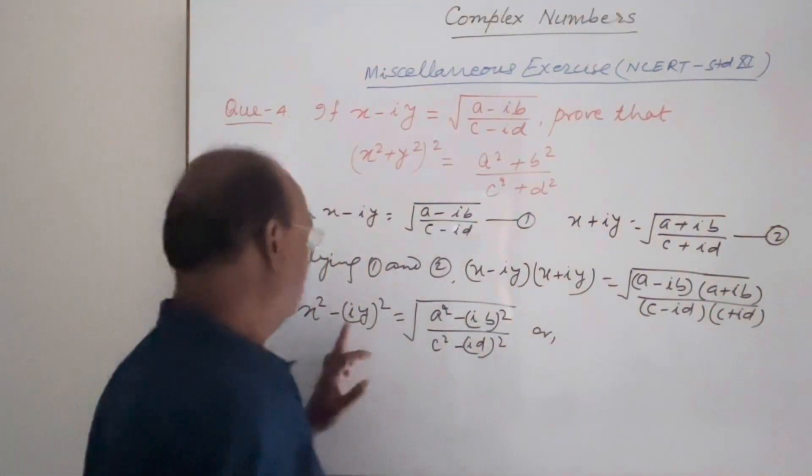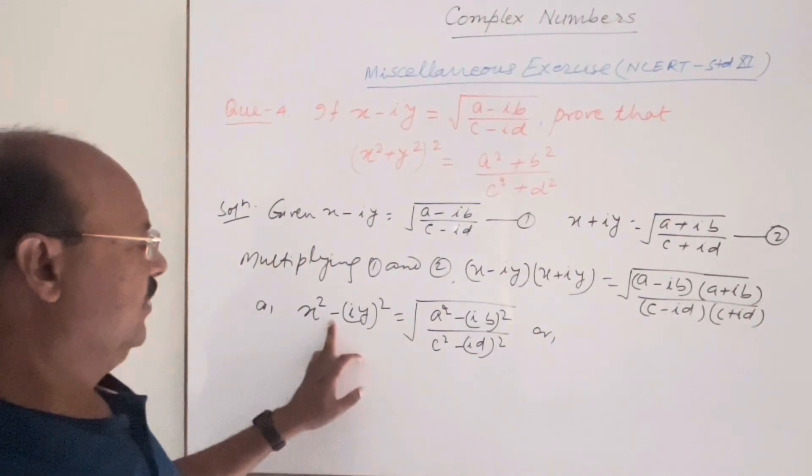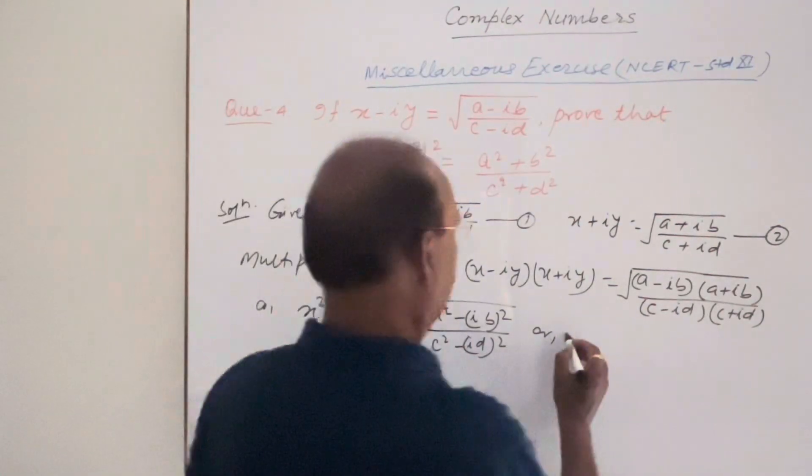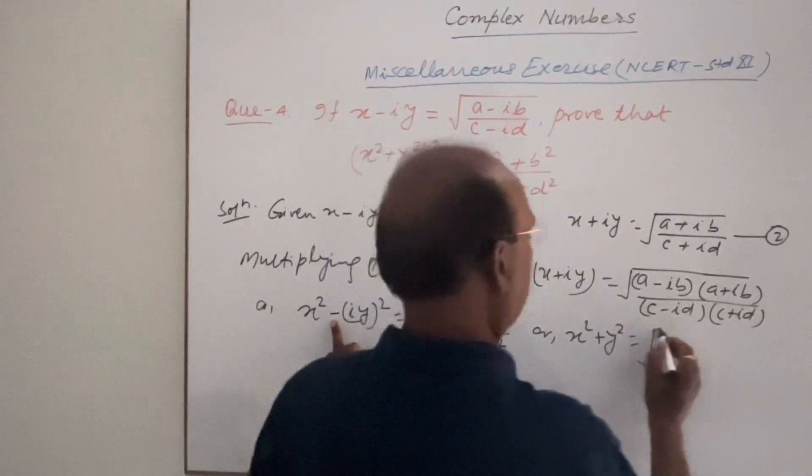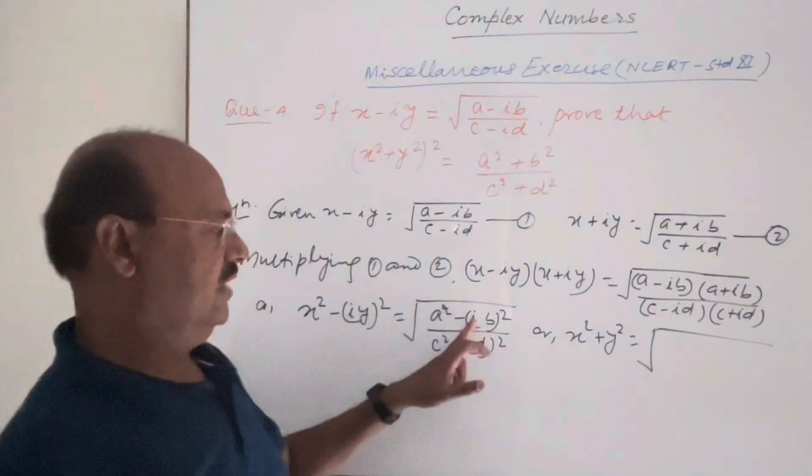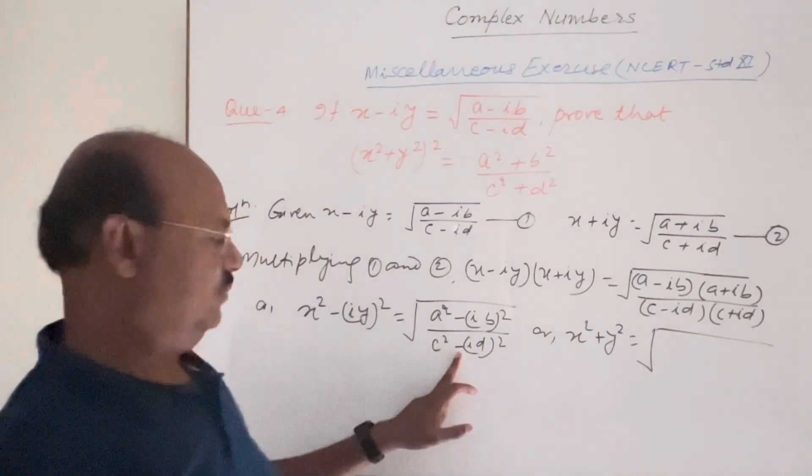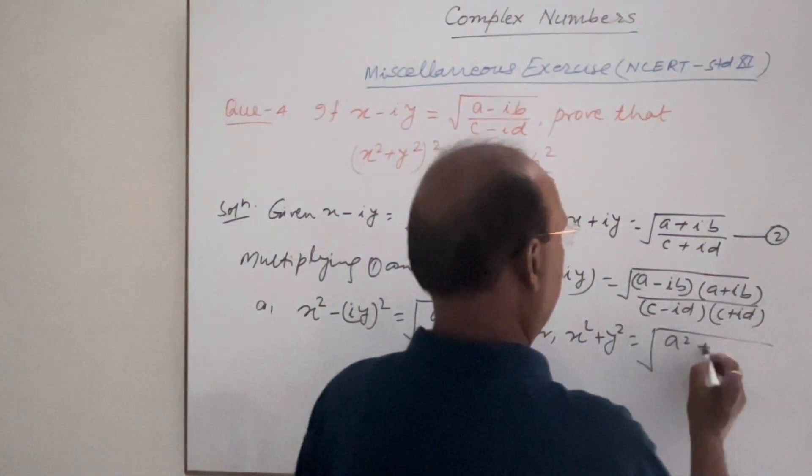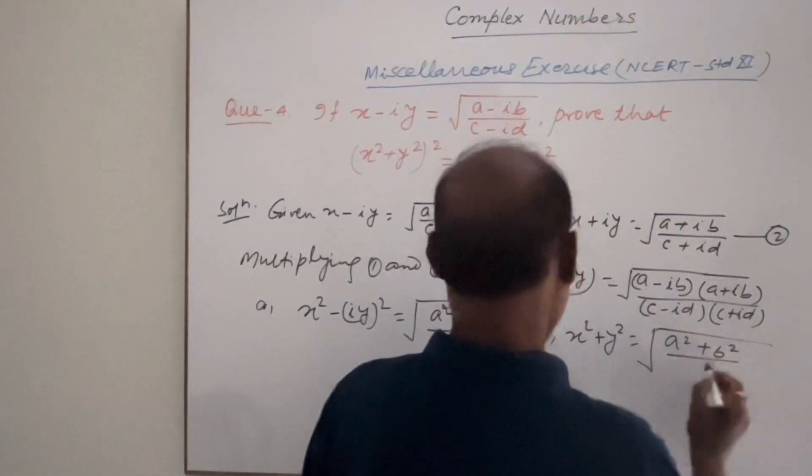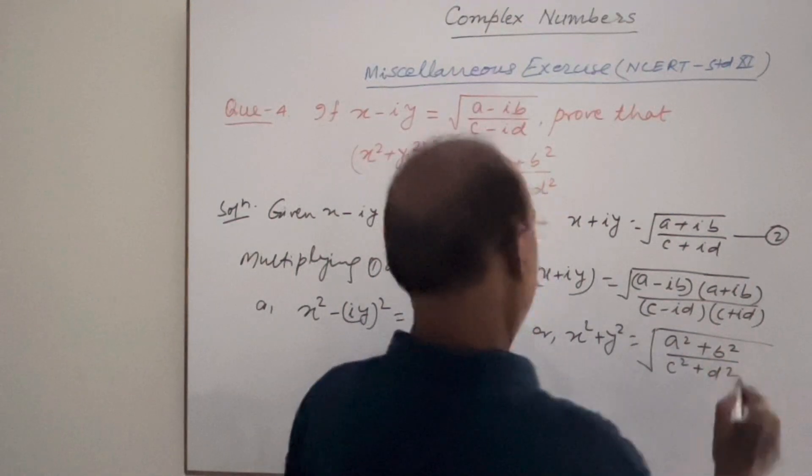Okay? Here i square is equal to minus 1. So this minus becomes plus. So we will get x square plus y square is equal to root over. Here also i square is minus 1. So this becomes plus. Here also this becomes plus. So this is a square plus b square and in denominator c square plus d square.